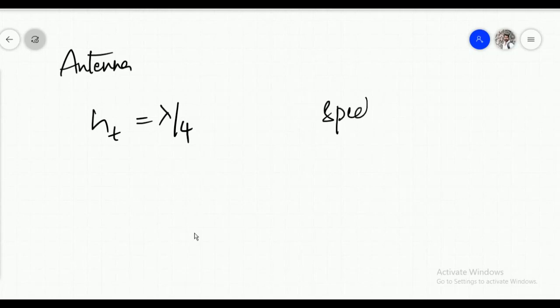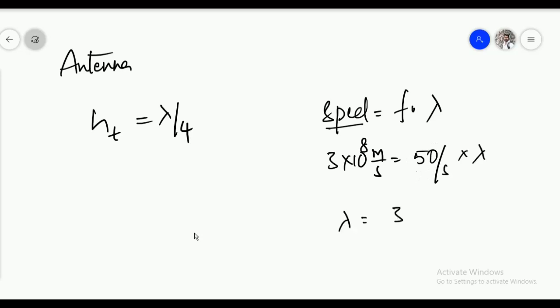And also we have a formula. The speed equal to frequency into wavelength. The speed of the electromagnetic wave will be the speed of light, that is 3 into 10 power 8 meter per second, equal to frequency into lambda. And I know the frequency I want to transmit is 50 Hertz. So lambda will be equal to 3 into 10 power 8 by 50 meters. That will be 6 into 10 power 6 meters.